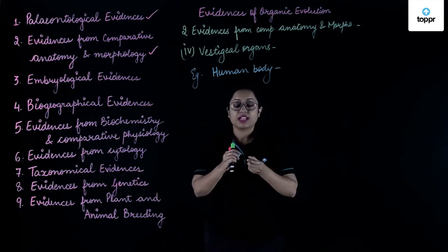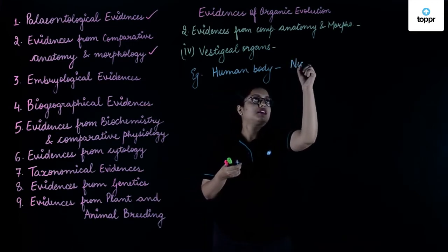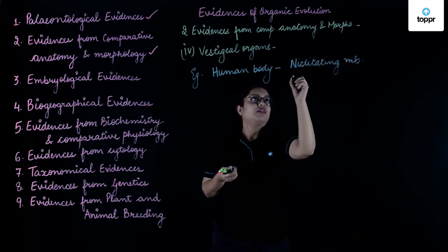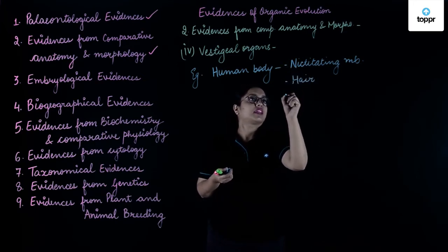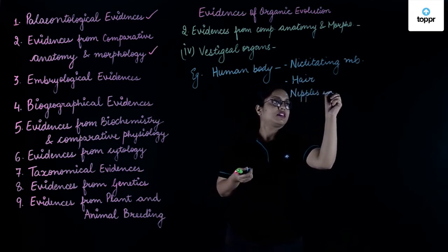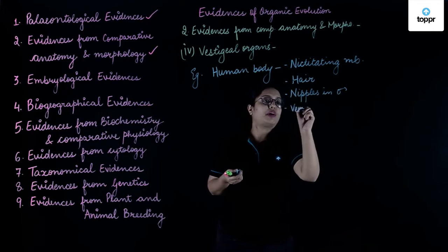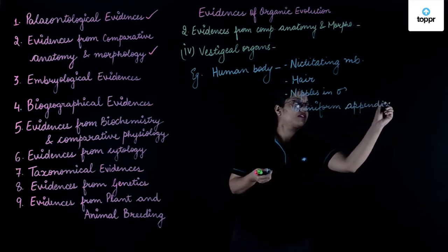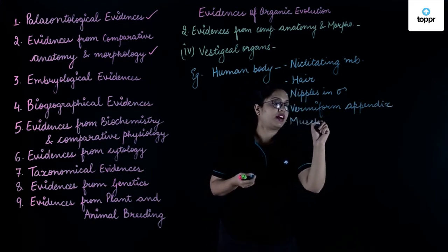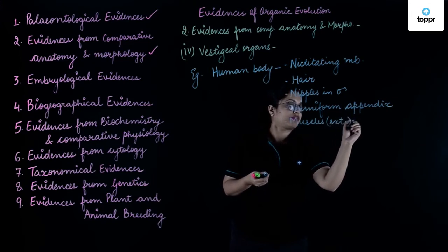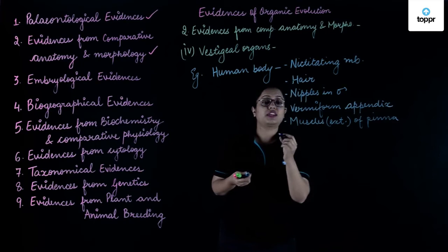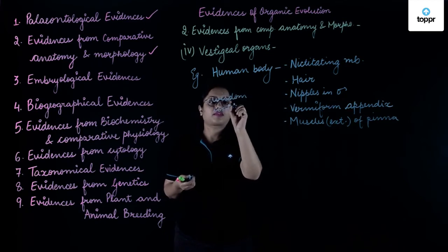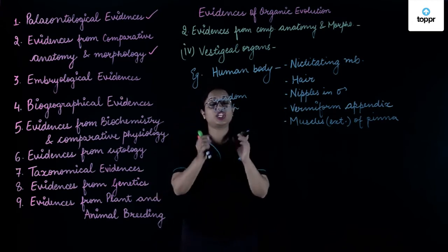Examples of vestigial organs in humans include: the nictitating membrane, hair in the human body, nipples in males, vermiform appendix, the muscles of pinna (that is, external muscles of pinna), and wisdom tooth. These are various vestigial organs which are present in our body.